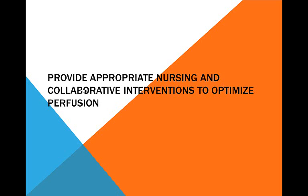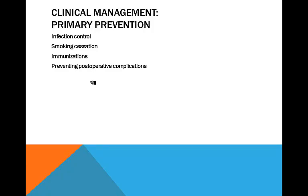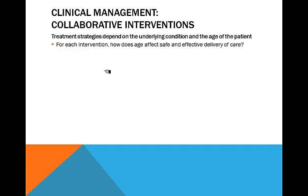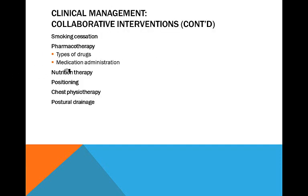Now that you can identify if your patient is having respiratory difficulties, what do you do about it? Encourage good infection control, excellent hand hygiene, smoking cessation, immunizations, and prevent post-operative complications by encouraging the incentive spirometer, making sure they're wearing their sequential compression device and TED hose, and making sure they're getting anticoagulant therapy if they've just had surgery.